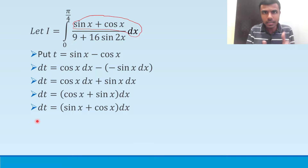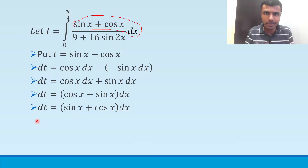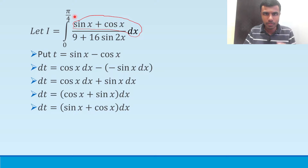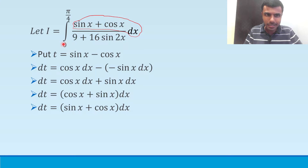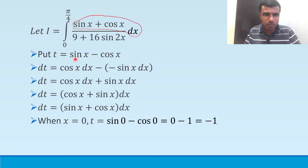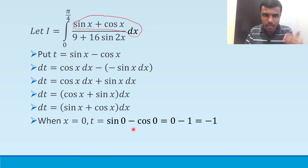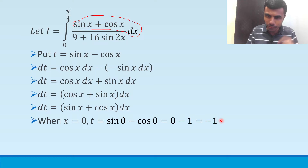Now my target is to convert everything in terms of t, including the limits as well. Here my limits are for x; I want limits for t. When x is 0, t = sin 0 minus cos 0 = 0 minus 1 = minus 1. So I got my lower limit for t as minus 1.